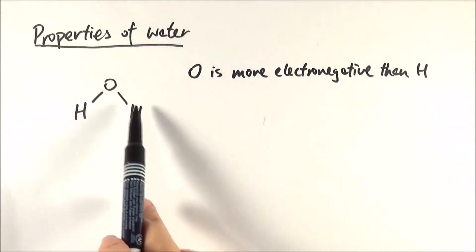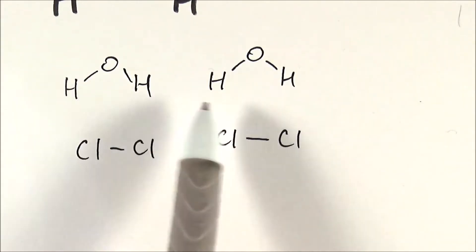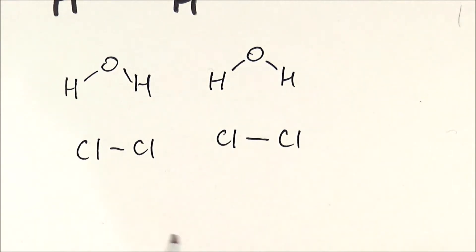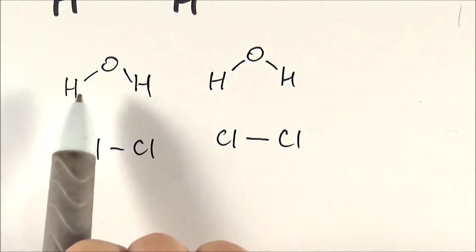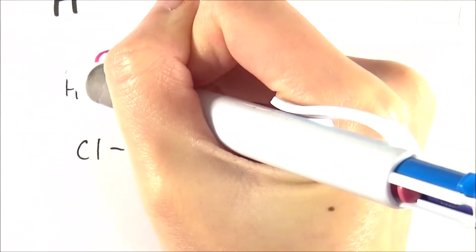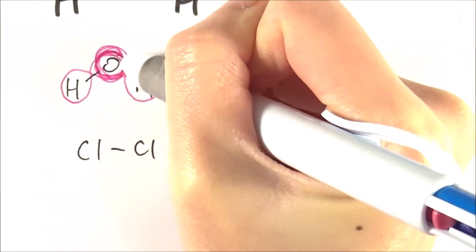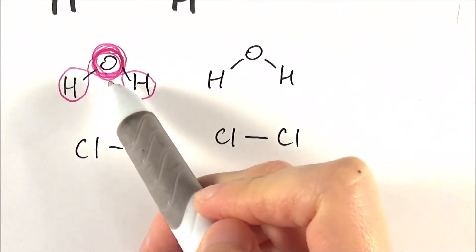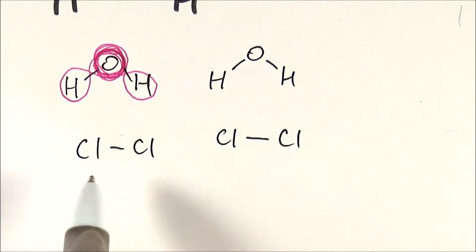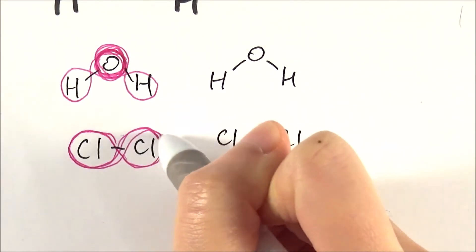The electrons shared between the two atoms will spend more time orbiting around oxygen rather than hydrogen. For example, in water, the electrons will orbit around oxygen most of the time, occasionally going to hydrogen and back. In a chlorine molecule, because both atoms are the same, the nucleus of each has equal power of attraction, so the electrons travel evenly around both nuclei.